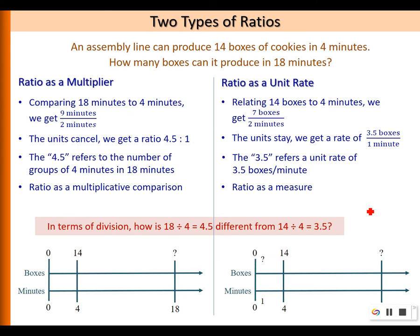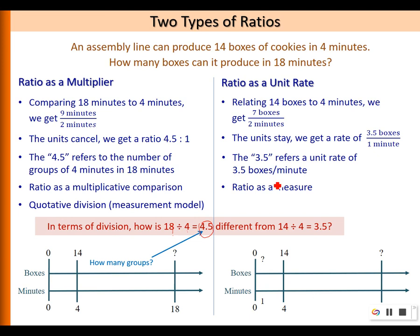In terms of division, how is 18 divided by 4 different from 14 divided by 4? The answer for 18 divided by 4 — which is 4.5 — refers to the number of groups of 4 minutes in 18 minutes. This type of division is called quotative division, or the measurement model. Another way of describing it is the 'how many groups' interpretation of division. So 4 minutes forms one group, and 18 minutes has 4 and a half groups of 4 minutes.